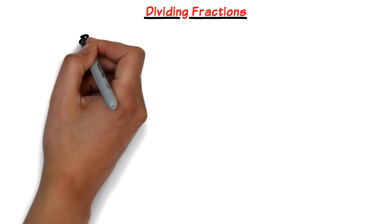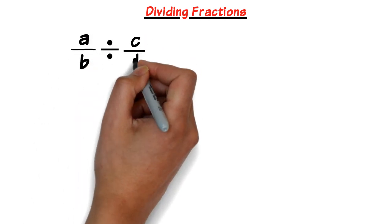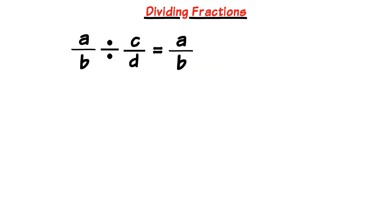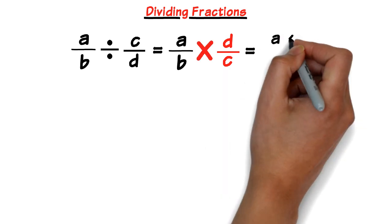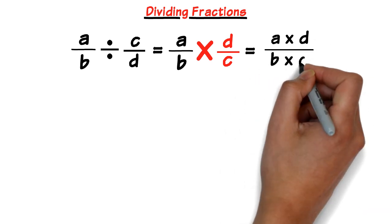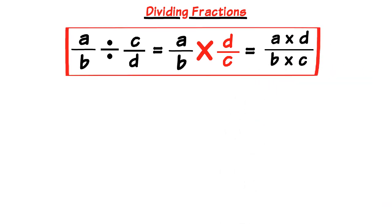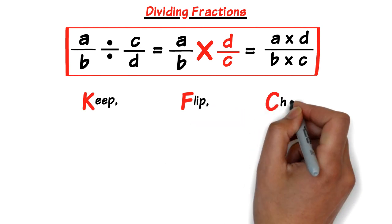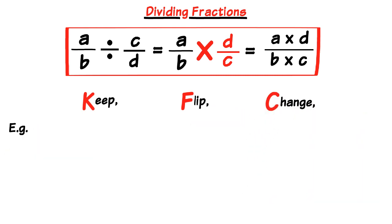Dividing fractions is almost identical to multiplying, except there's one extra step. When we divide fractions, we flip the second fraction upside down — invert it — and change the divide sign into a multiplication sign. We keep the first fraction the same. You can remember KFC: Keep the first fraction, Flip the second fraction, and Change the sign to times.